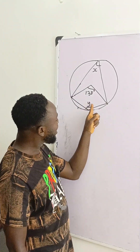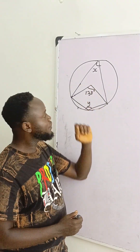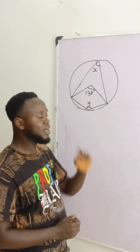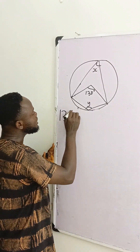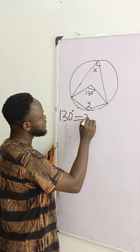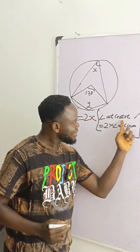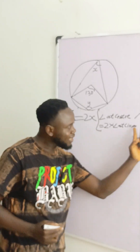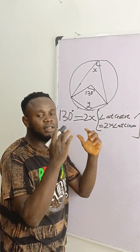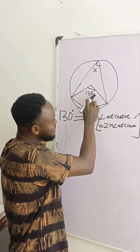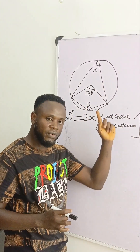This is a circle theory problem and we are required to find the value of y and x. We can quickly find the value of x from the angle we have at the center. So we can write 130 degrees is equal to 2x, because the angle at the center is twice the angle at the circumference. That is one of the theorems of circle theory — the angle at the center is 2 times the angle at the circle reference.